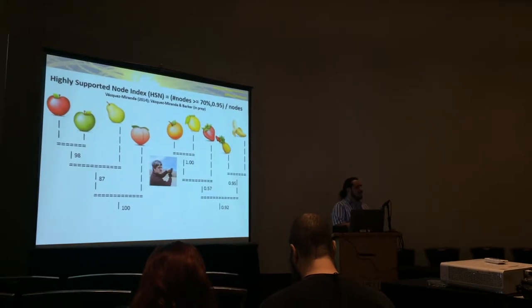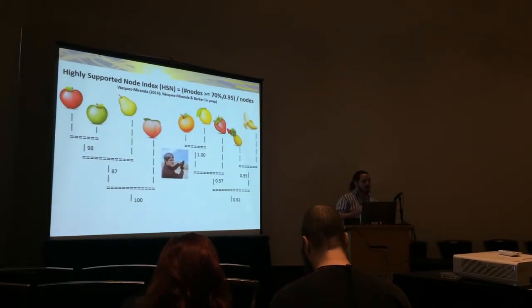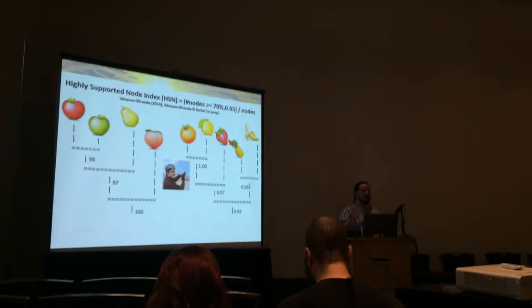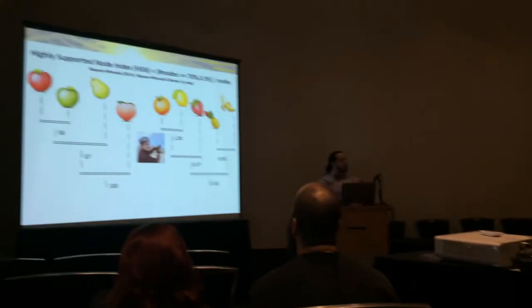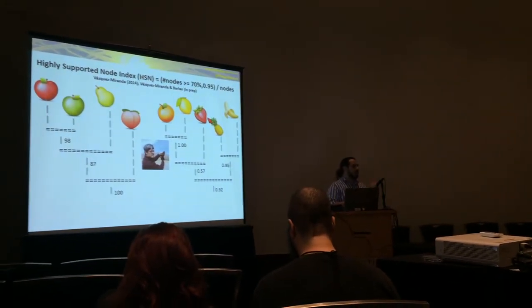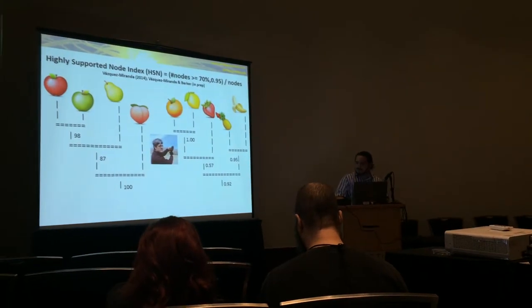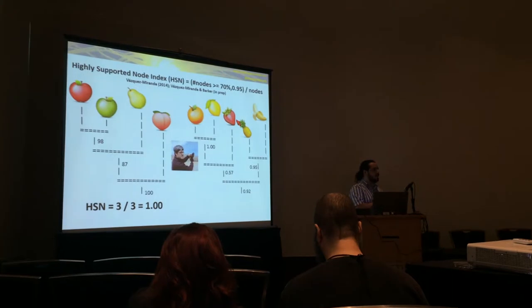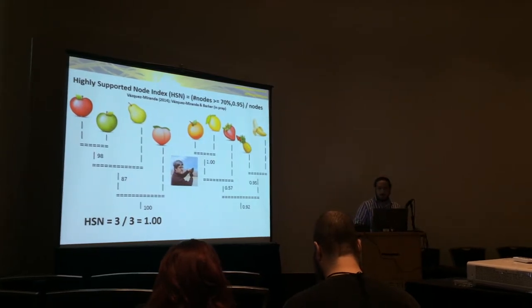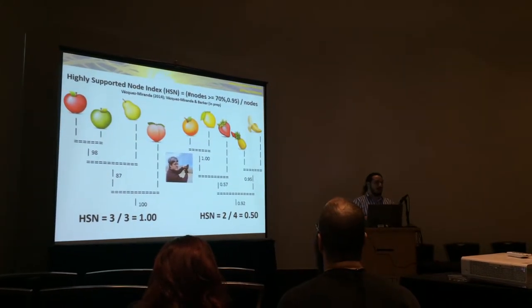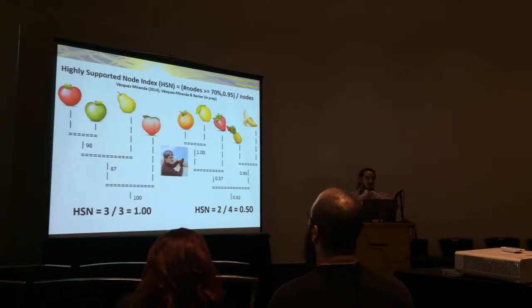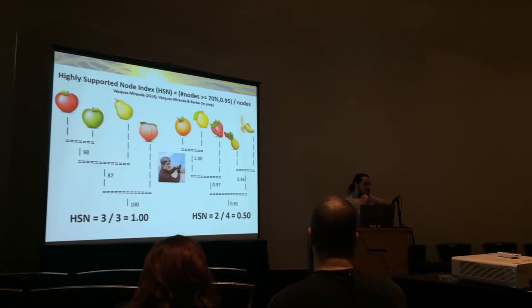Keith Parker and I have come up with this idea of summarizing that information. You determine a threshold of support — for example, I am using 70% bootstrap support by Hillis and Bull in 1993, which is probably the lowest node support threshold that makes biological sense. What we do is divide the number of nodes that meet that threshold by the total number of nodes. For example, the apple phylogeny on the right has three nodes, all three highly supported, so you get an index of 1. The logic is very similar to other normalizing indexes that go from 0 to 1. The orange phylogeny has only two of four nodes highly supported, so it has an HSN index of 0.5. So before you couldn't convert apples to oranges — well, now you can.